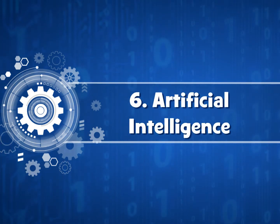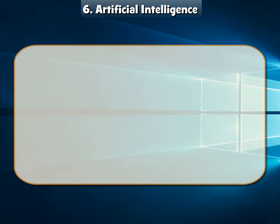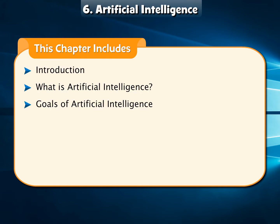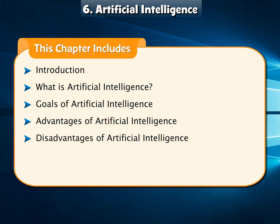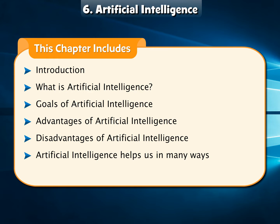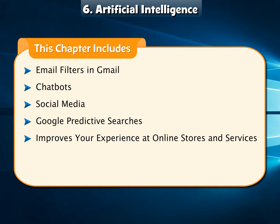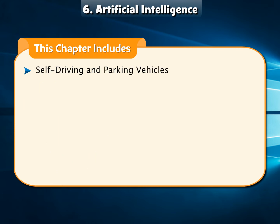Chapter 6: Artificial Intelligence. This chapter includes an Introduction, What is Artificial Intelligence, Goals of Artificial Intelligence, Advantages and Disadvantages of Artificial Intelligence, and how AI helps us in many ways — including Digital Assistance, Email Filters in Gmail, Chatbots, Social Media, Google Predictive Searches, online stores, Mobile Banking, Maps and Directions, Self-driving and parking vehicles, and Artificial Intelligence in Robotics.